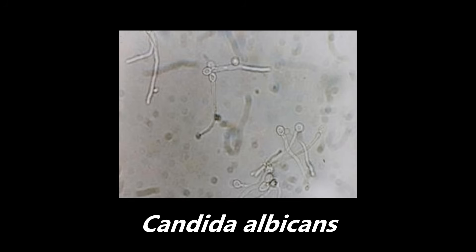This next one is an example of Candida albicans as it exists at body temperature. It's seen as germ tubes, which are true hyphae. Candida albicans can exist in different forms at different temperatures, but at body temperature it exists as germ tubes.